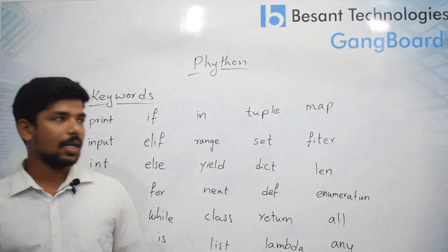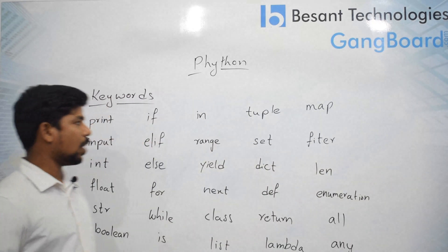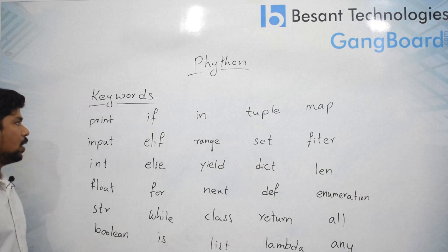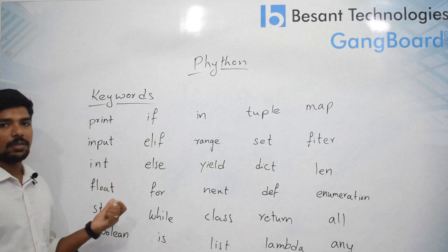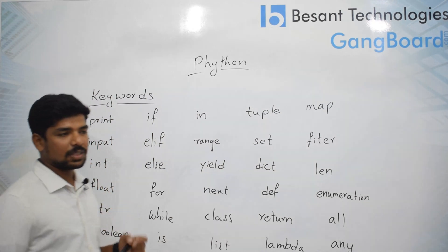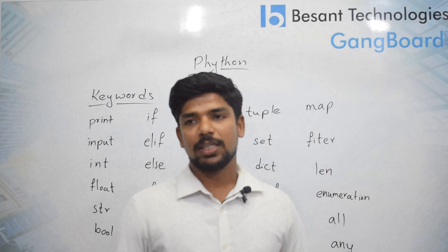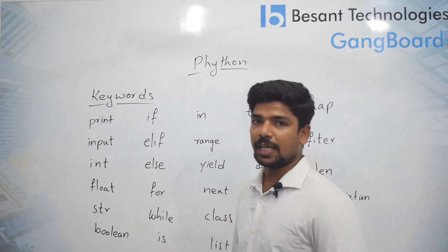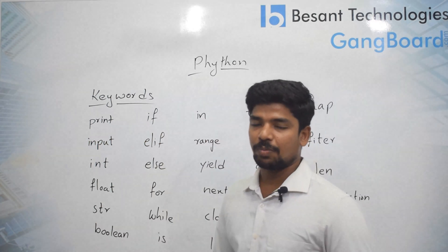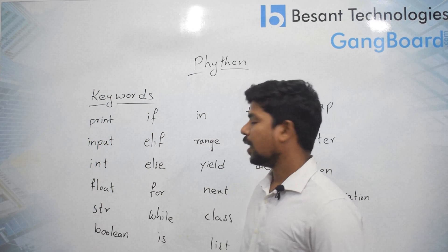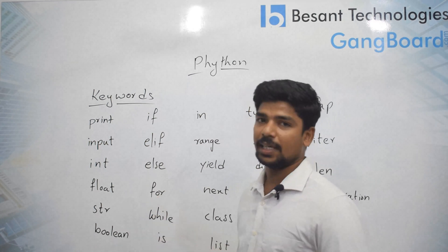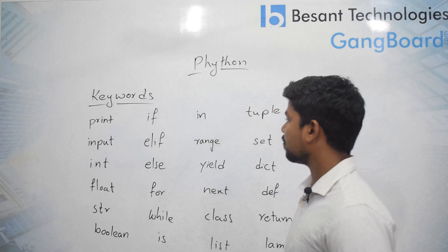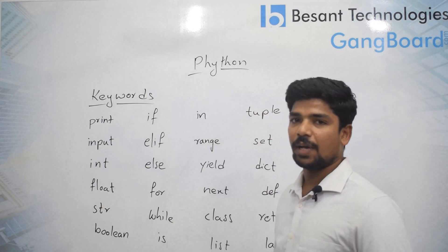Let us take each individual word and see what it means. 'print' is the general word used to print output on the display. 'input' is used for taking raw input from the user from the console. 'int', 'string', and 'float' are data types. 'boolean' is also a data type.